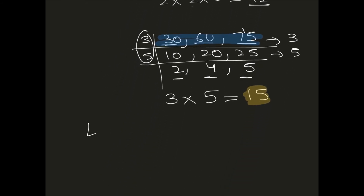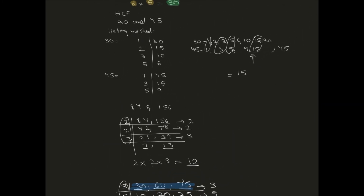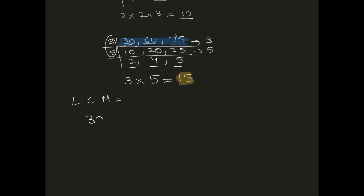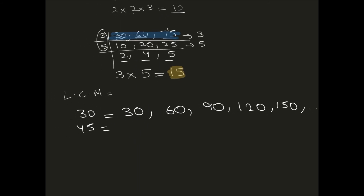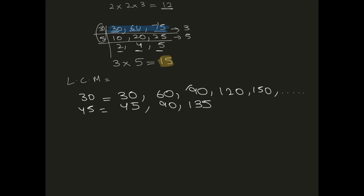Now let's look at LCM. In LCM you list down the multiples instead of factors. For 30 and 45: multiples of 30 are 30, 60, 90, 120, 150; multiples of 45 are 45, 90, 135. The lowest common multiple is 90. But this listing method is harder, so we use the table method instead.